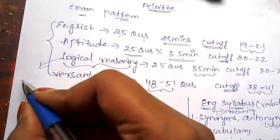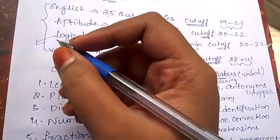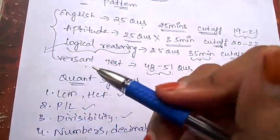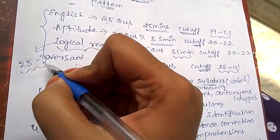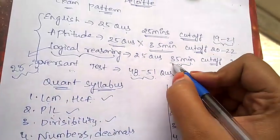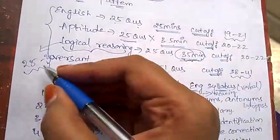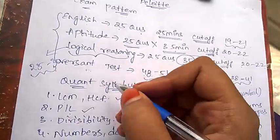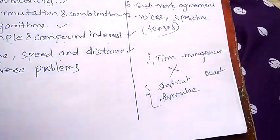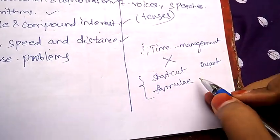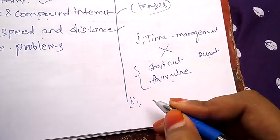In logical reasoning there will be reading comprehension where you'll be having a paragraph of 25 to 30 lines which you cannot read within 35 minutes. Like, out of 35 minutes if you give 5 to 10 minutes just for one paragraph, how can you reach this cutoff? So always make sure that you remember the shortcuts and formulas for quantitative aptitude.